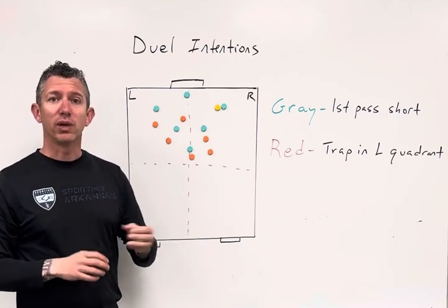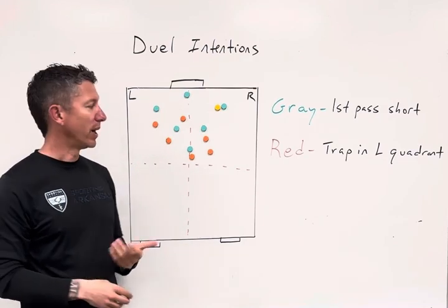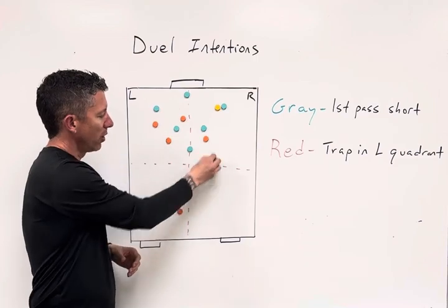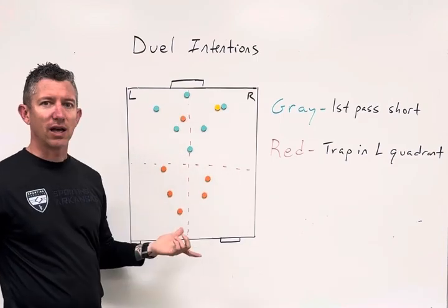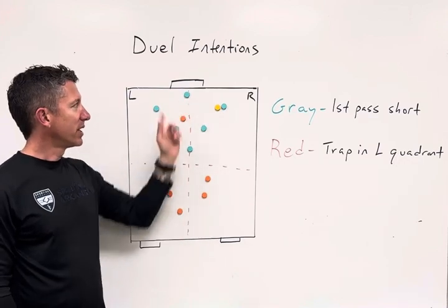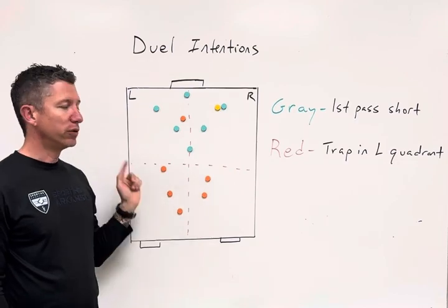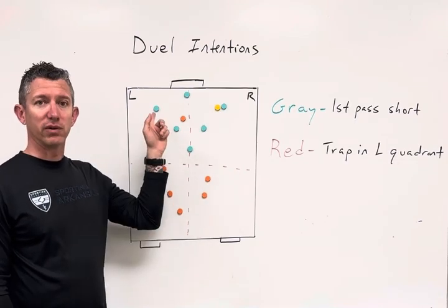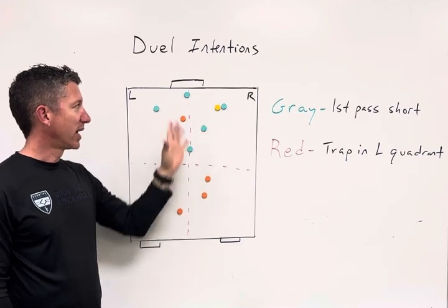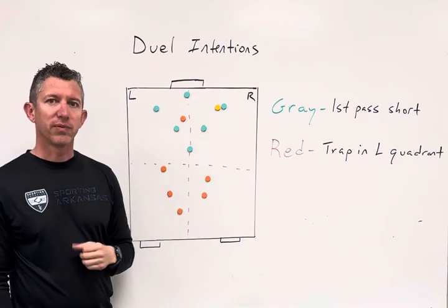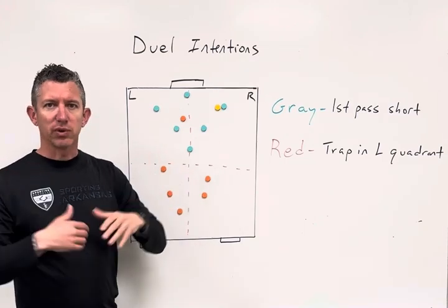Using dual intentions — having one team given one condition, restriction, or incentive, and the opposing team given a different one — will change how each team approaches their task in a more realistic way. In this scenario we have a 7v7: Red is attacking the big goal, Blue is attacking the two small goals, and we've divided the field into four equal quadrants — left, right, defensive half, and attacking half from Blue's perspective.